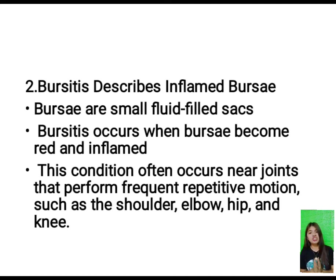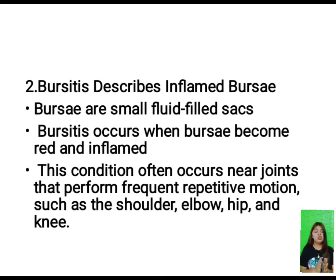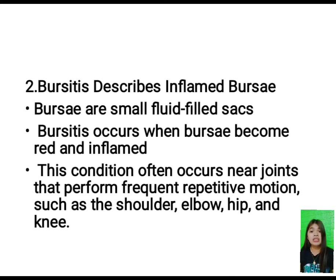The second pathology is bursitis, which describes inflamed bursae. Bursae are small fluid-filled sacs that cushion the bones, tendons, and muscles near the joints. Bursitis occurs when bursae become red and inflamed, causing pain, and often occurs near joints that perform frequent repetitive motion such as the shoulder, elbow, and hip.